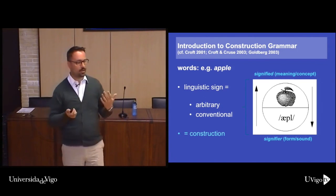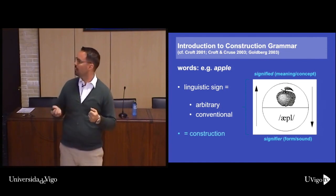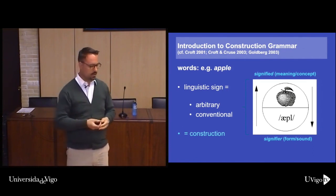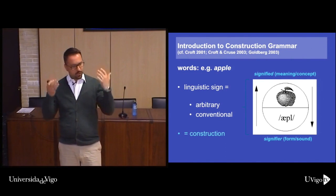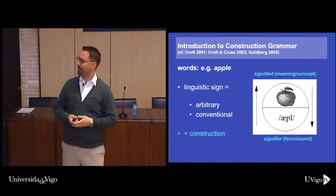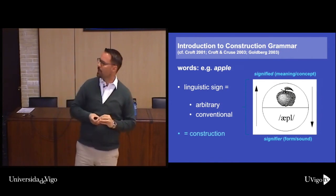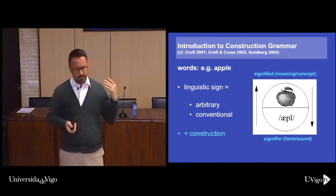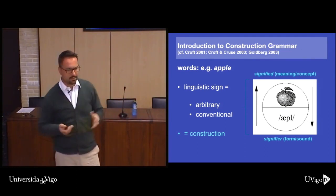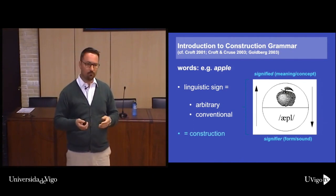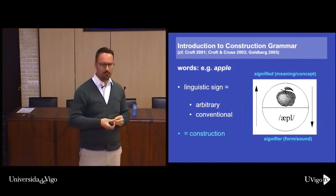If you've got a linguistic sign, a word like 'apple', you know it's got a string of sounds associated with a conceptual meaning. In line with cognitive theories, we assume the mental representation is a rich concept that includes the shape of an apple, how apples taste, what you can do with it, how they smell — a multimodal representation that is encyclopedic and not just semantic truth-conditional. The relationship is arbitrary and conventional, because in English we say 'apple', in German 'Apfel', French 'pomme', Hungarian 'alma' — different strings of sounds for a similar concept.